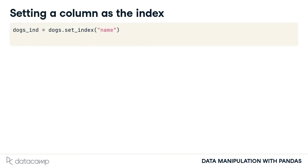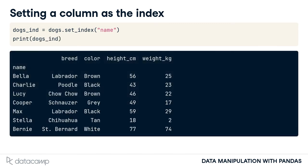You can move a column from the body of the data frame to the index. This is called setting an index and it uses the setIndex method. Notice that the output has changed slightly. A quick visual clue that name is now in the index is that the index values are left-aligned rather than right-aligned.